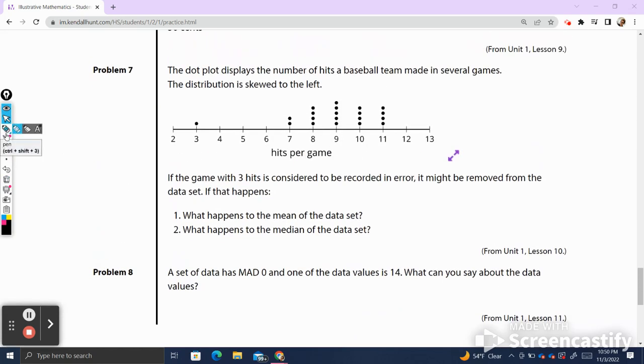Problem number seven. And this is going back to review from unit one. The dot plot displays the number of hits a baseball team made in several games. The distribution is skewed to the left. Remember, when we have skew, the skew is always where the tail is. And the tail is on the left side, which is why we're skewed to the left. If the game with three hits is considered to be recorded in error, so that's this game right here, they made a mistake. And if it's removed from the data set, if that happens, what happens to the mean of the data? Well, when you remove an outlier, you are going to take the mean, and you're going to shift it in the direction of most of the data, which means the mean will get bigger. This is because we're not including this very tiny amount when we're taking the average.